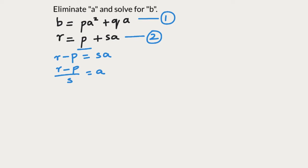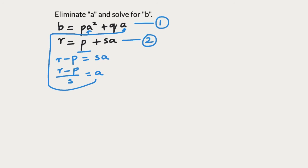Now we have isolated A and we can substitute this value of A at two places. Here at A squared and here at A. So equation 1 now looks like B equals P times, instead of A, we will put the quantity R minus P over S whole squared plus Q times the quantity R minus P over S.